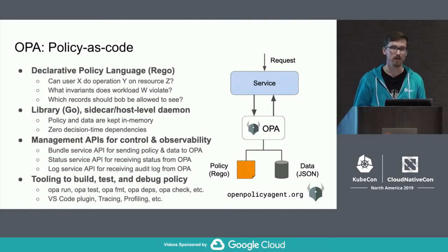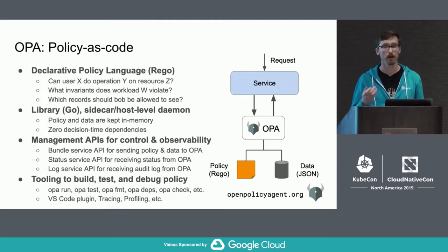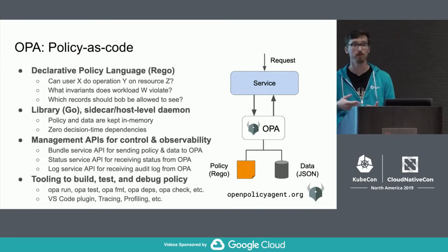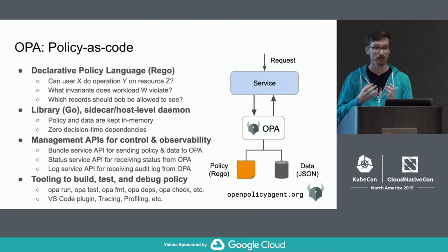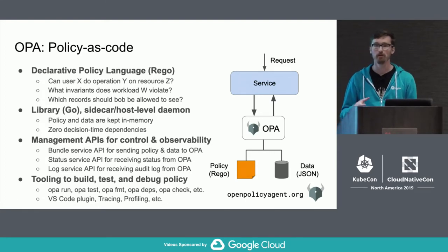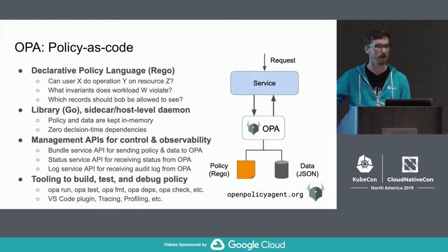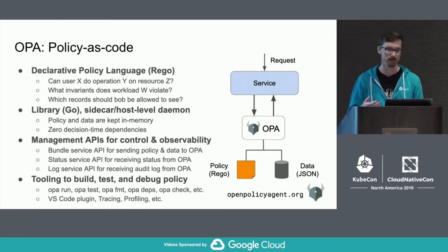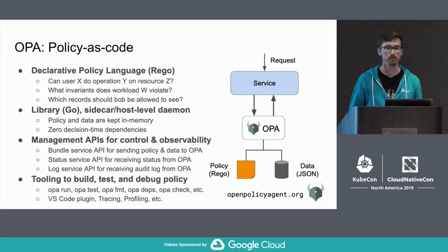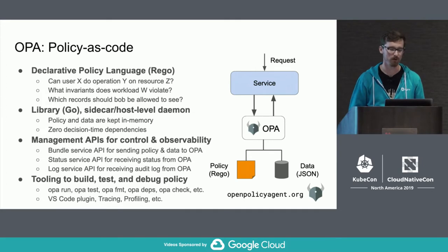We also have a status API that you can configure to receive status updates from OPA — telling you the version of bundles that have been activated or whether there were any errors activating the last version. And we have what we call the decision log API — a record of all policy decisions made by OPA, including the full input JSON, the policy bundle revision, and the decision that was made. You can upload those records to a remote HTTP endpoint for audit, debug, and testing purposes. OPA also embodies the idea of policy as code, with a rich toolchain including an interactive shell, a test framework for writing unit tests, IDE extensions like a VS Code plugin with interactive evaluation and coverage, and tracing and profiling tools.